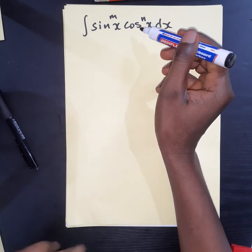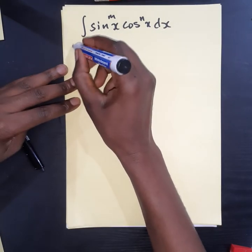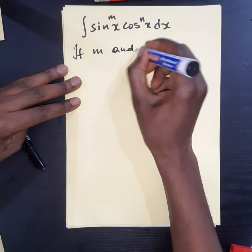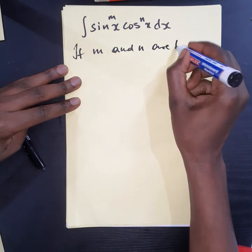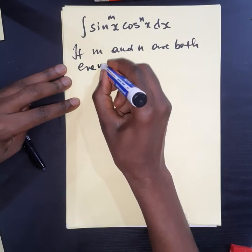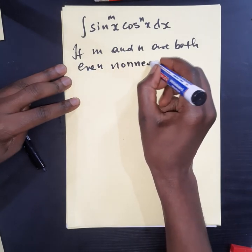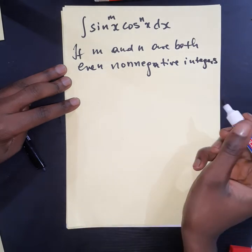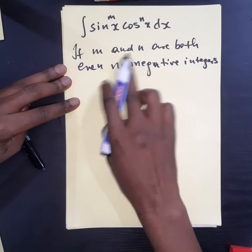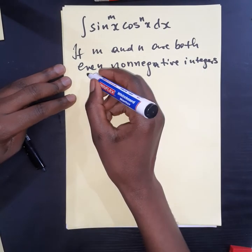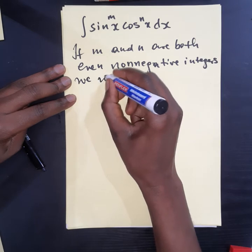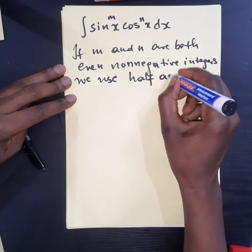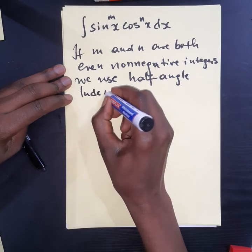So we need now to look at a situation where m and n are both even. So if m and n are both even non-negative integers, what do we do? If m and n are both even non-negative integers, we use half-angle identities.